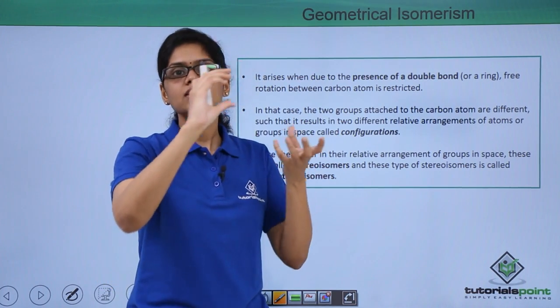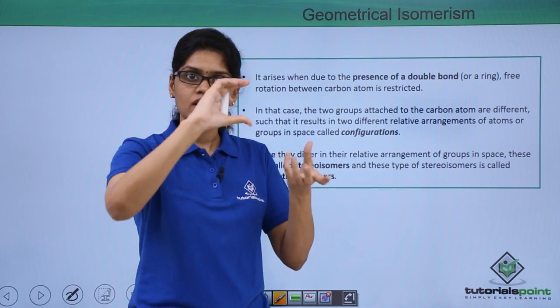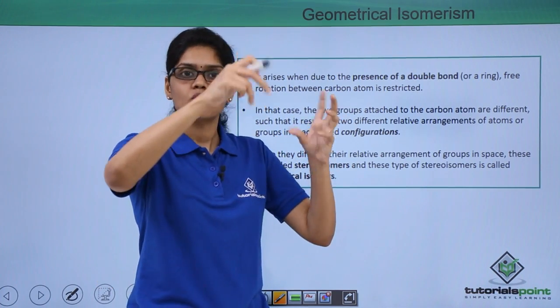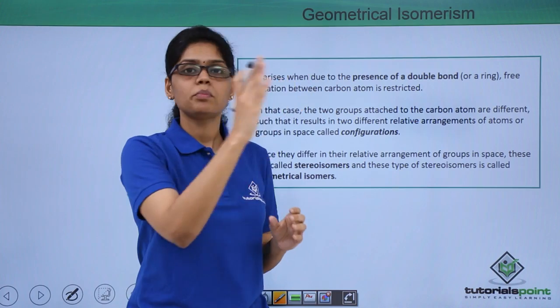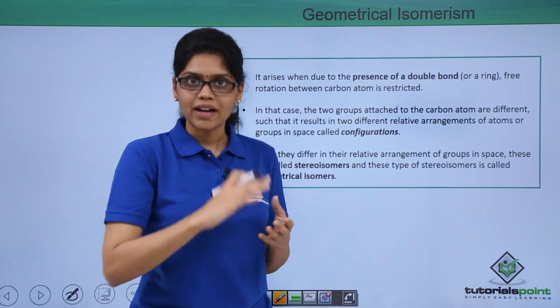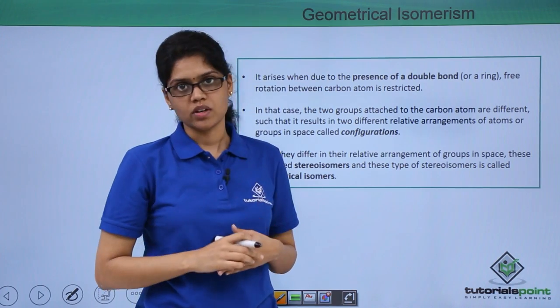If I try to change the relative position of these groups around the double bond then what essentially happens is we have to rotate it in such a way that the p-p overlap is no more possible because they are not parallel to each other anymore and the pi bond gets broken.